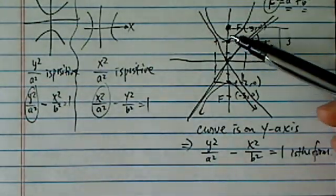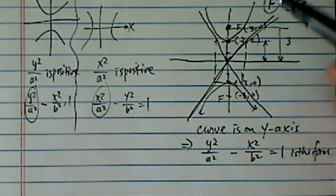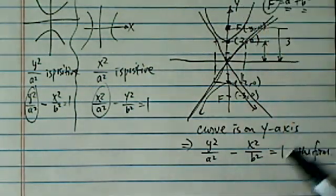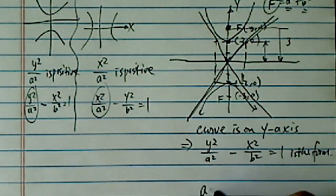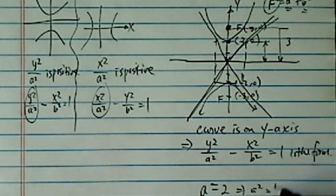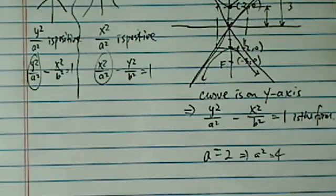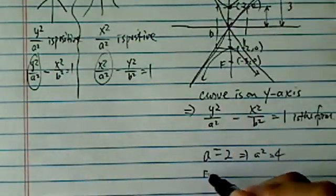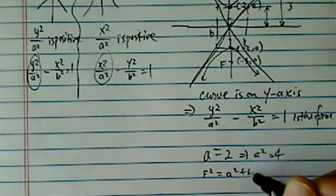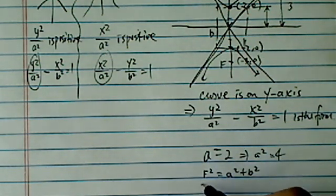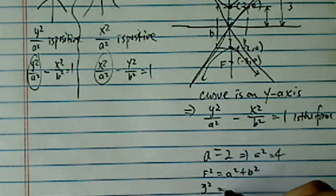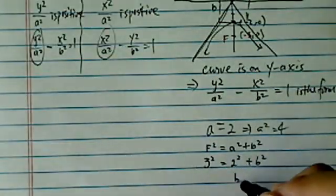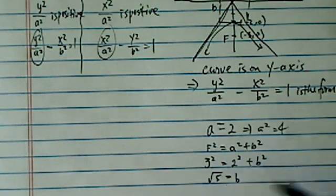So all we have to do is find what A and B is. Now it's easy for the constant on the Y axis, because we're given where the vertices are, so A is equal to 2, so A squared is equal to 4. Now in order to find B, we're going to use F squared is equal to A squared plus B squared. F, we were given as 3 squared, is equal to 2 squared plus B squared, and that was pretty easy to find, so B is equal to radical 5.